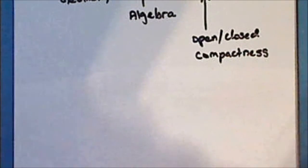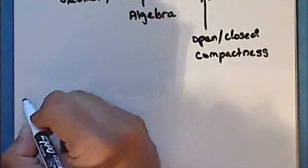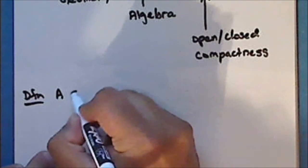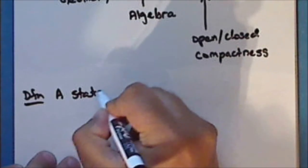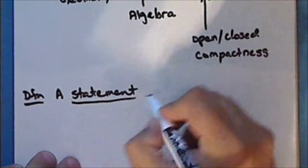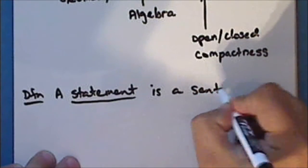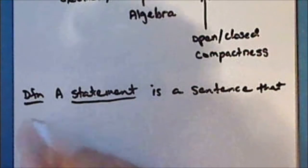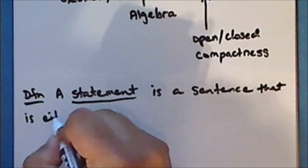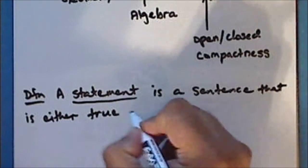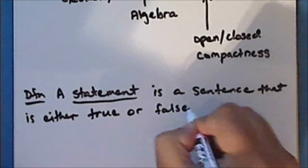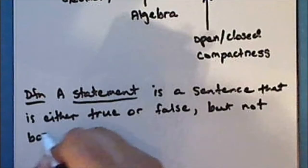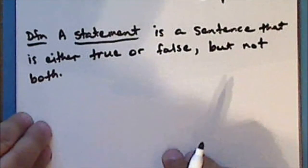Let's get started with our review of logic. We'll begin with the definition: in logic or mathematics, a statement is a sentence that is either true or false, but not both. Let's look at some examples.